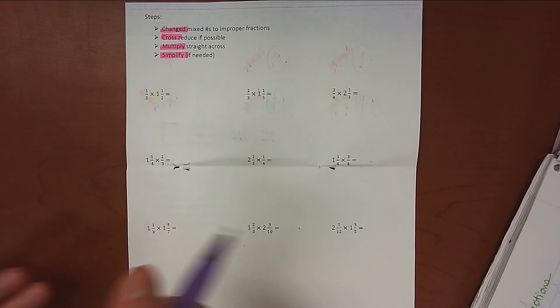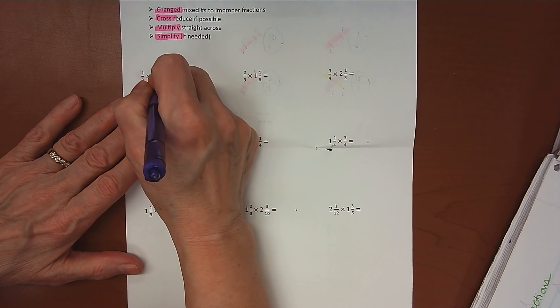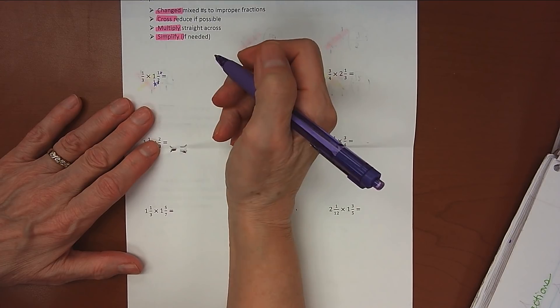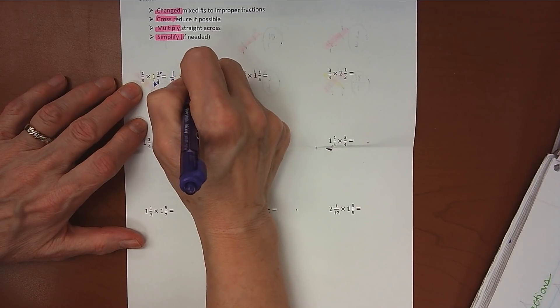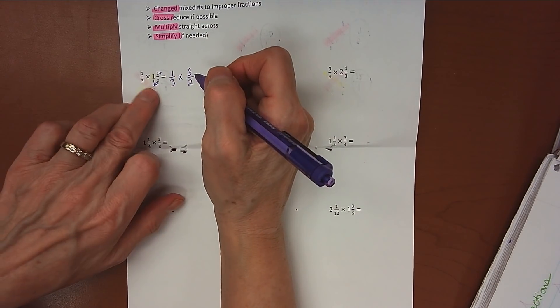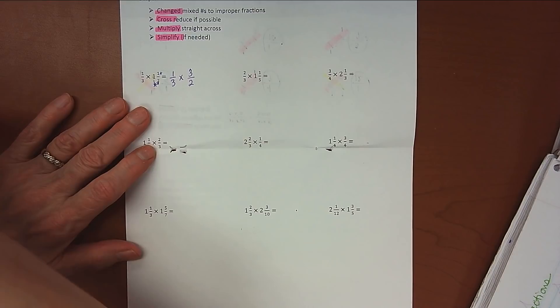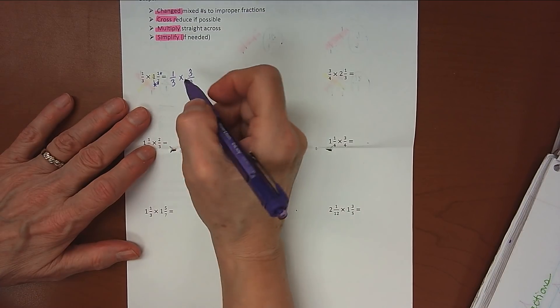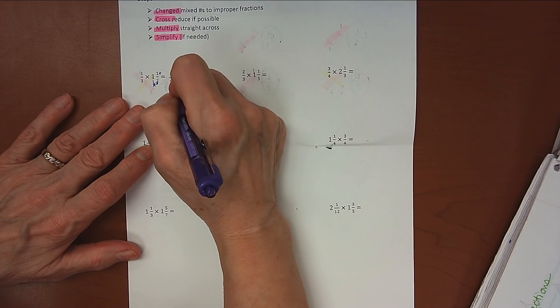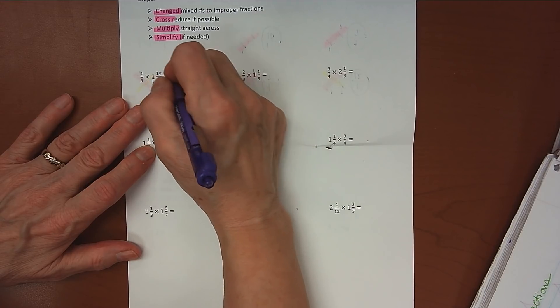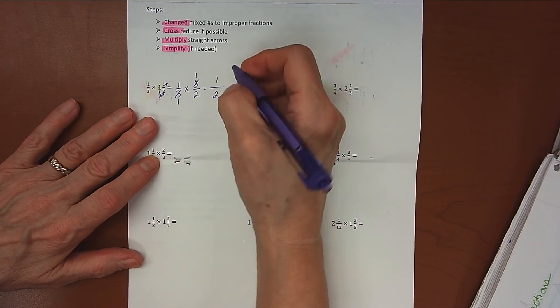Alright, so here we go. Our very first one is 1/3 times 1 and 1/2. So we're going to multiply 1 times 2, and that's 2, and then we're going to add 1, so that's 3/2. So this becomes 1/3, this one doesn't change, but 3/2. Looking to see if I can cross-simplify, and sure enough, I see that 3 and 3, those can both be divided by 3, so 3 divided by 3 is 1, 3 divided by 3 is 1. I can't cross-simplify here, so I'm ready to go. 1 times 1 is 1, 1 times 2 is 2, and my answer is 1/2.